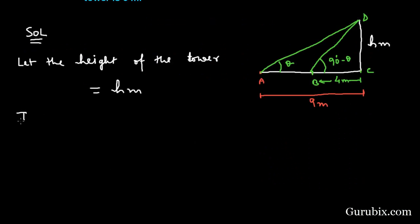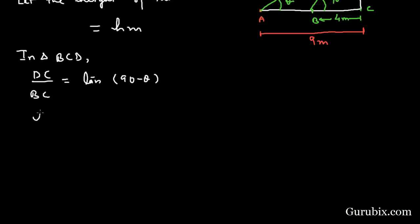So in triangle BCD, DC over BC equals tan of 90 minus theta. So here we have tan 90 minus theta is cot theta. This is our equation number 1.